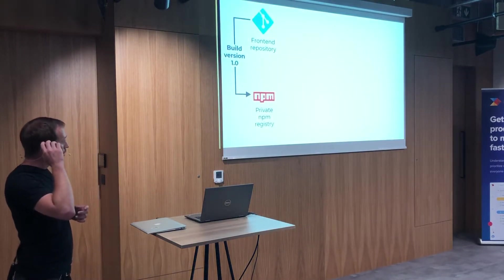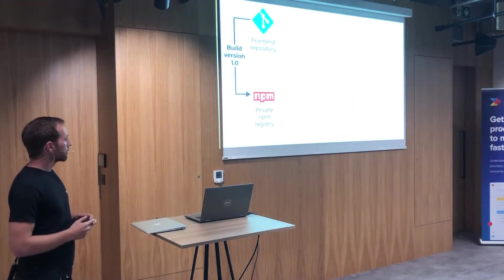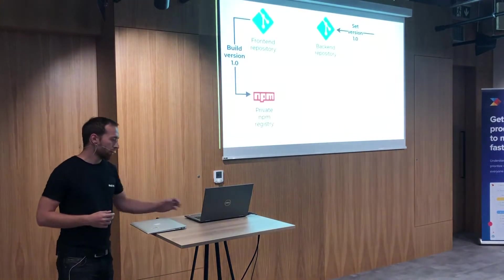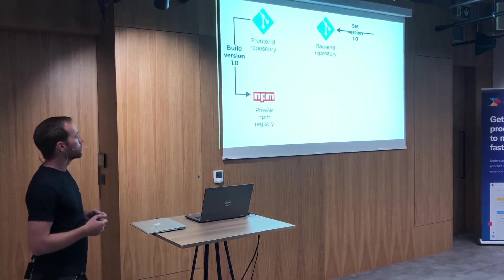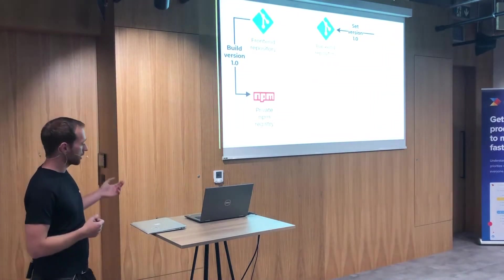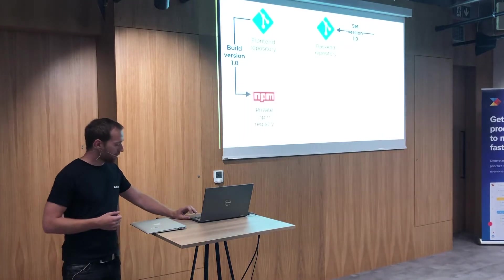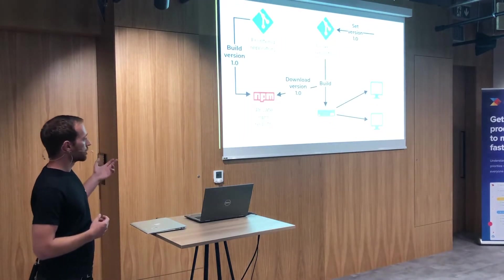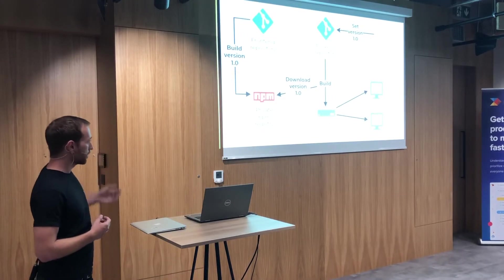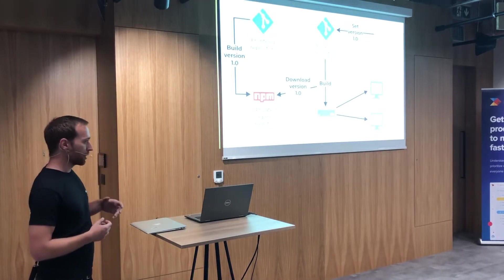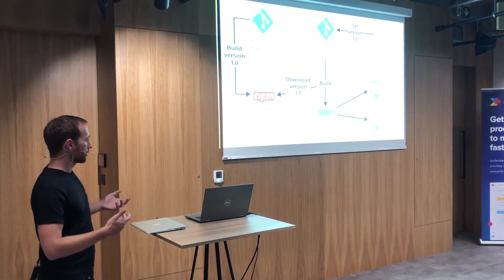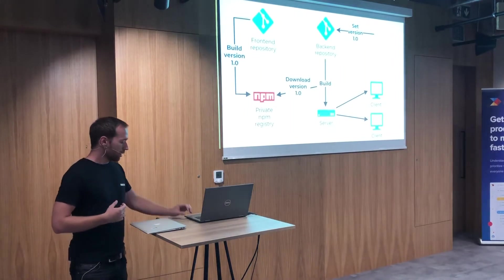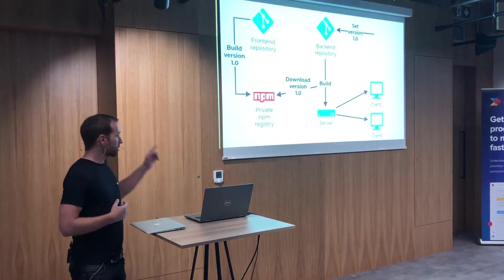It went like this: we built the front-end repository, we had a private NPM registry that was packaged with some version, then we went to the back-end repository, set the exact version we needed there, then the back-end repository was built and as part of the build it downloaded the package with that version, unpacked it, copied it to itself, and deployed it like that.